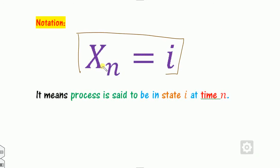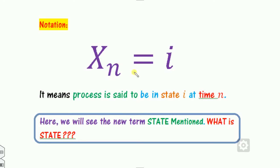The notation is important: Xₙ represents the state at time n. For example, if X₃ = A in the lipstick example, it means the lady will purchase lipstick brand A after three time periods, i.e., after three days. In the Markov model we always focus on two things: the state and the transition probability.